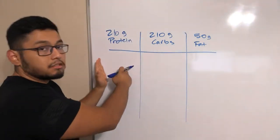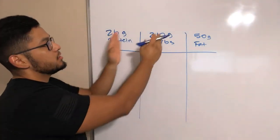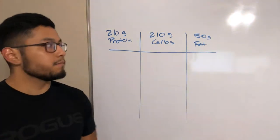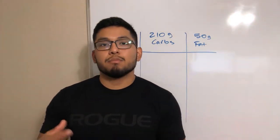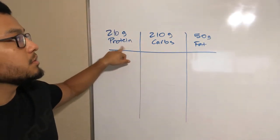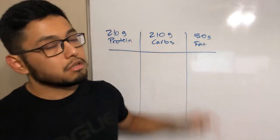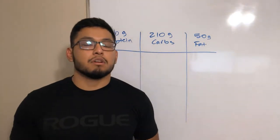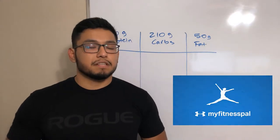Let's say some macronutrient calculator online, wherever you find it, gave you these numbers. Think of this as your budget. Think of this as okay, I have 210 for this account, 210 for this account, and 50 for this account. In order to find out how many dollars of protein are in a food, how many dollars of carbs, how many dollars of fat, you want to download an app called MyFitnessPal.